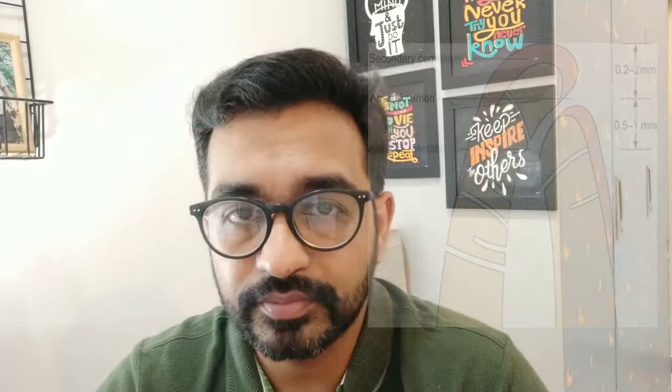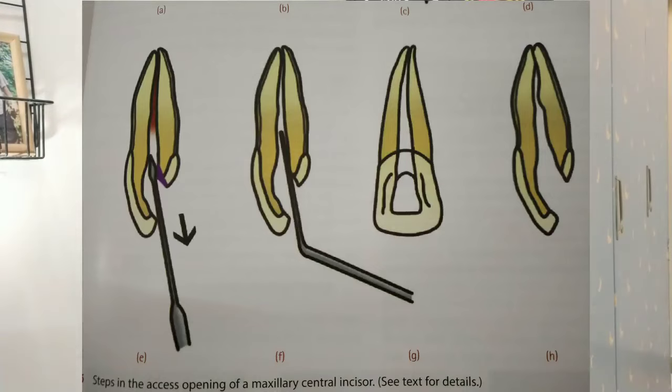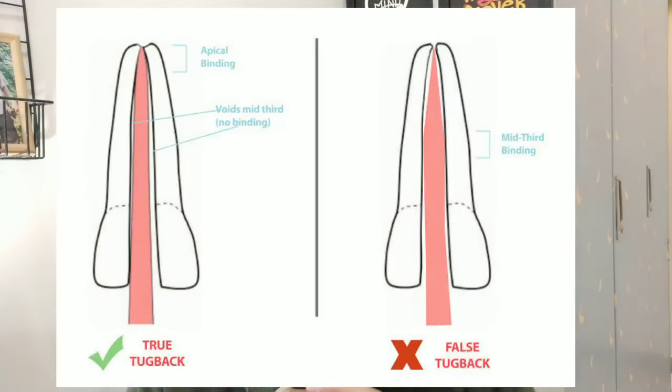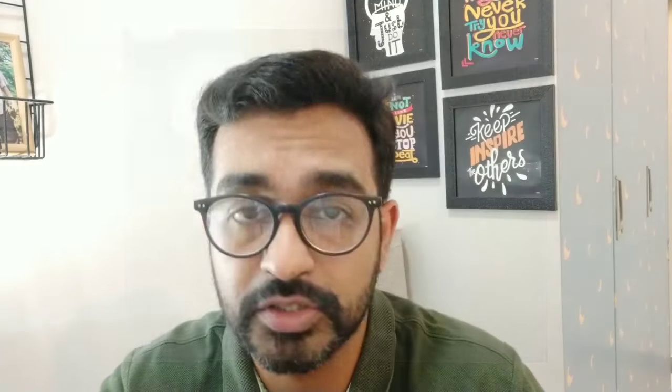Whenever we are doing root canal of the upper anterior teeth, we have to keep many things in mind — especially the apical one third. The motto in root canal is that your file or instrument should go from the coronal aspect till the apex of the tooth, and your filling should also be there till the apex. If you leave 2 to 3 mm of root space unfilled, initially 1 to 2 years nothing will happen. But the patient will come back with infection, requiring a re-RCT, which gives a bad reputation. So why not do the root canal very nicely the first time itself.